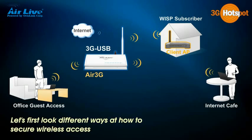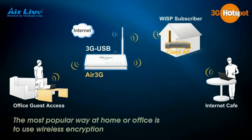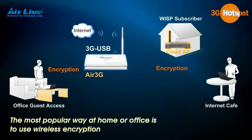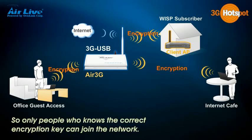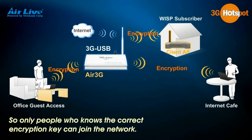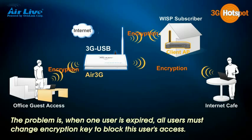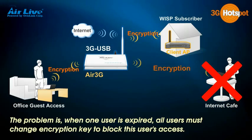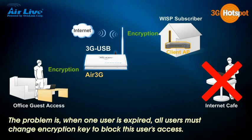Let's first look at different ways to secure wireless access. The most popular way at home or office is to use wireless encryption, so only people who know the correct encryption key can join the network. The problem is, when one user expires, all users must change the encryption key to block that user's access.